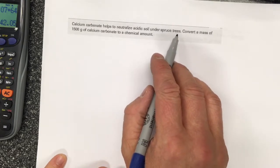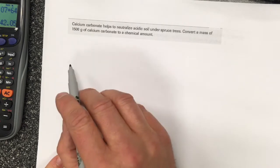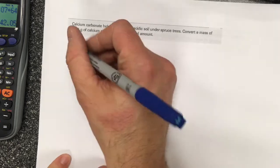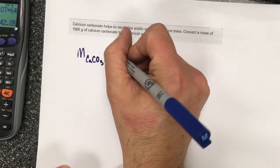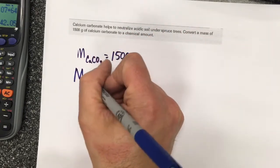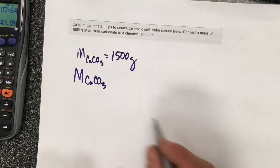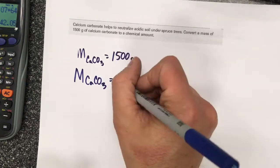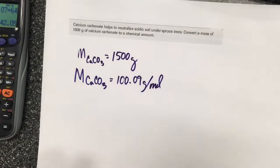Convert a mass of 1500 grams of calcium carbonate to a chemical amount. The mass of CaCO3 is 1500 grams, and the molar mass of calcium carbonate, which is made of one calcium, one carbon, and three oxygens, is 100.09 grams per mole.